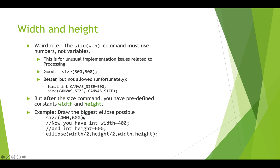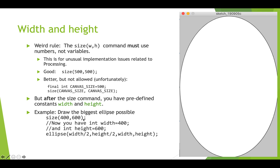For example, you can write `size(400, 600)` and then use `ellipse(width/2, height/2, width, height)` to draw the biggest ellipse possible on the canvas. What seems funny is that `width` and `height` are sort of constants that Processing makes for you once you call the `size` function, but Processing for whatever reason doesn't use all caps — they're lowercase like a variable name. Anyhow, Processing has its quirks.